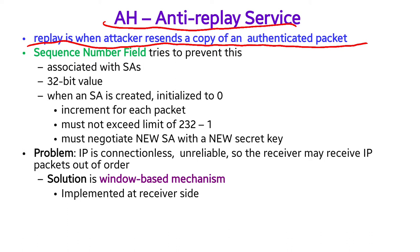To counter this, we use anti-replay, which relies on the sequence number field. The sequence number is associated with the security association (SA) as a 32-bit value. When the SA is created, it is initialized to zero and incremented per packet. It should not exceed 2 to the power 32 minus 1. When it reaches that limit, a new SA with a new secret key must be established. The problem is that IP is connectionless and unreliable, so the receiver may receive IP packets out of order.